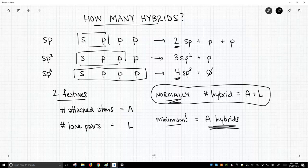But for now, we're gonna do the standard thing and we will count up all of our attached atoms and all of our lone pairs, and each one of those will typically get a hybrid.